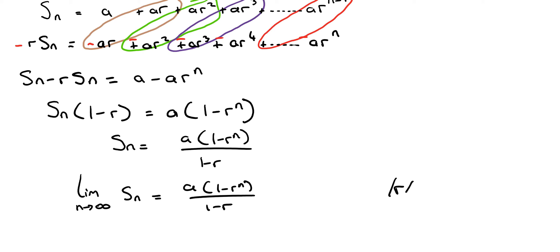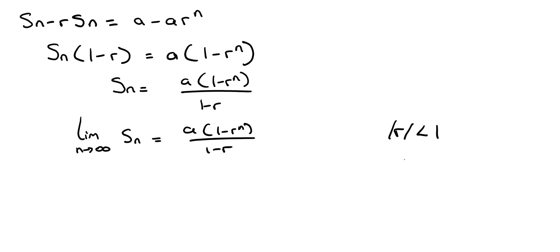Remember, r is less than one. That means that r squared is going to be less than r, because if you type into your calculator a fraction, you multiply it by itself, any fraction multiply it by itself and then keep multiplying it by itself, you're going to find that it's getting smaller and smaller and smaller.